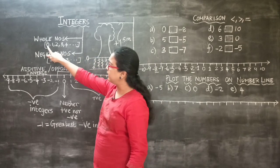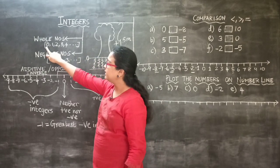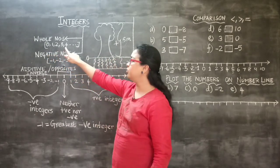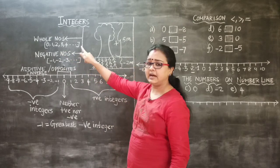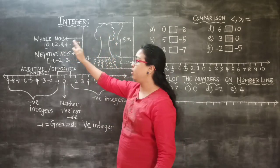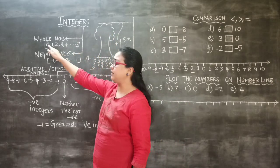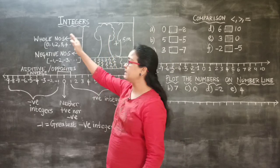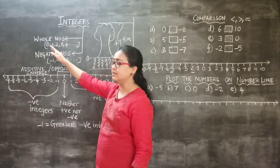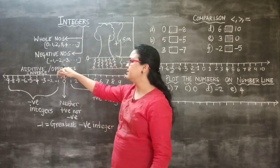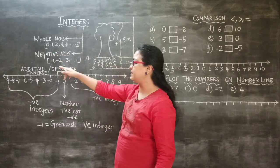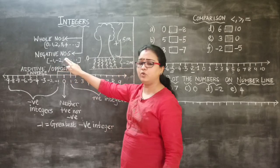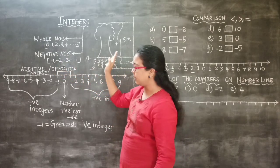Whole numbers start with 0, 1, 2, 3 and keep going — right from 0, all those numbers are called whole numbers. Negative numbers are the numbers minus 1, minus 2, minus 3 and they keep going.